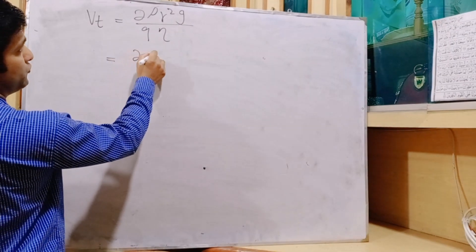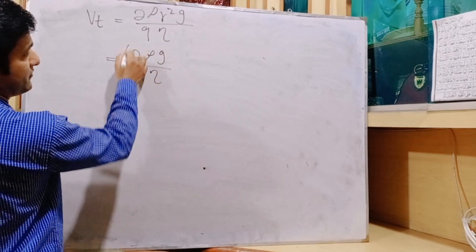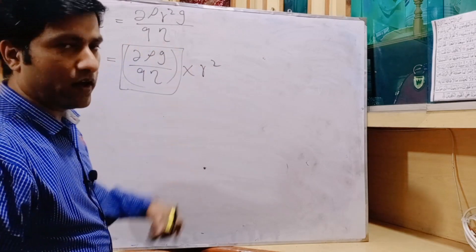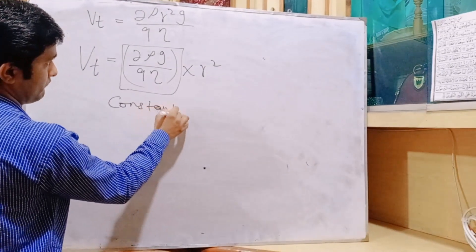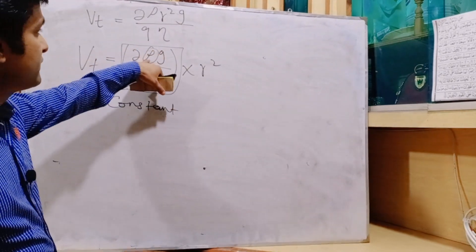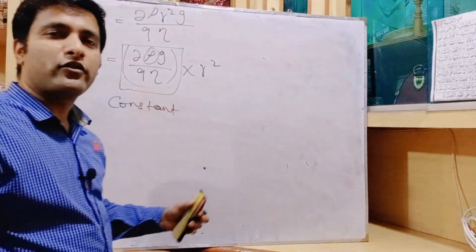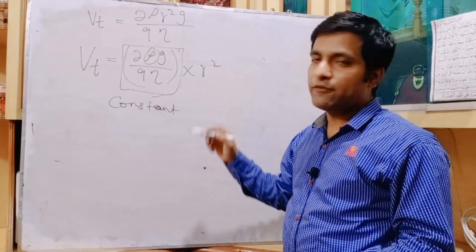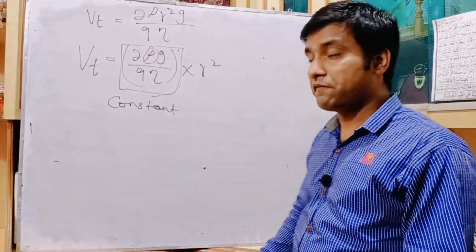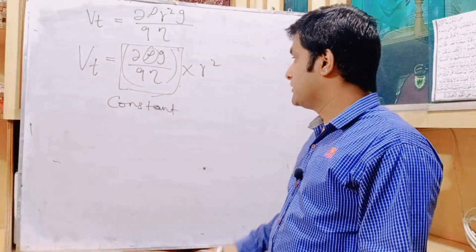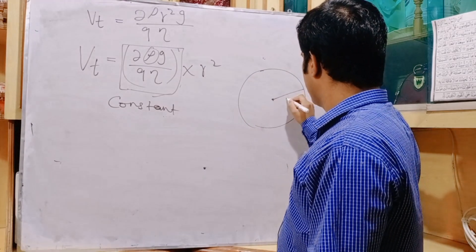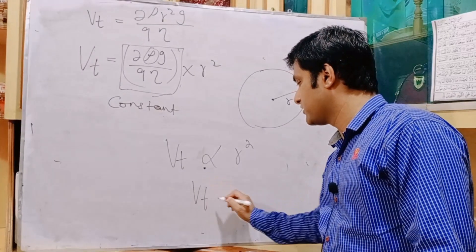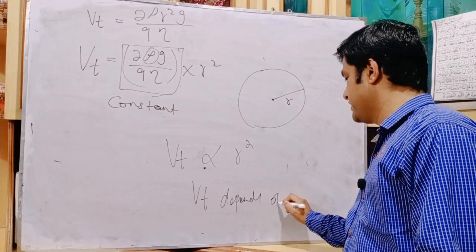So terminal velocity equals (2ρg / 9η) · r². All of these quantities — density of air, value of g, and η (the coefficient of viscosity) — are constants. The only variable is r, the radius of the spherical object, in our case the fog droplet. Therefore, terminal velocity is directly proportional to r², meaning terminal velocity depends on the size of the object.